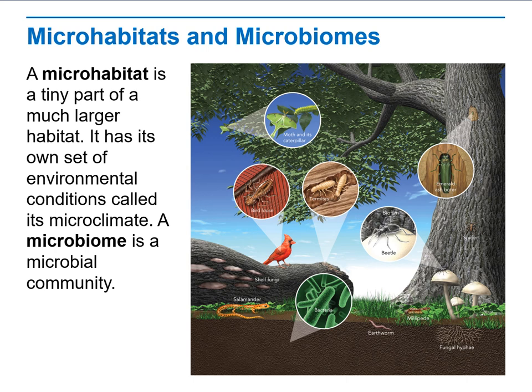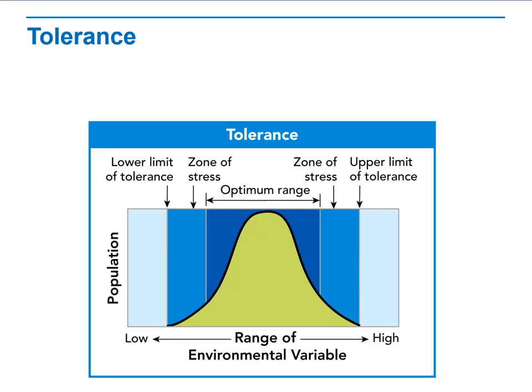A microhabitat is a tiny part of a much larger habitat. Micro means small, so it has its own set of environmental conditions called a microclimate — micro meaning small, climate meaning the environmental conditions within it. A microbiome is a microbial community that contains microbes inside it.